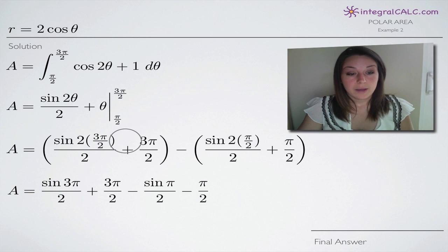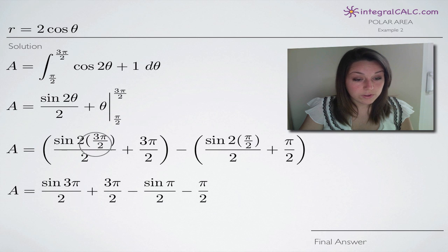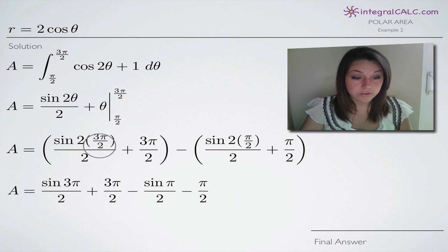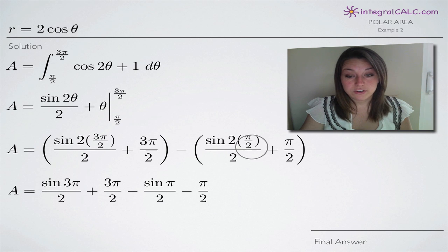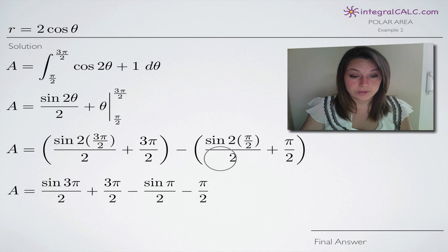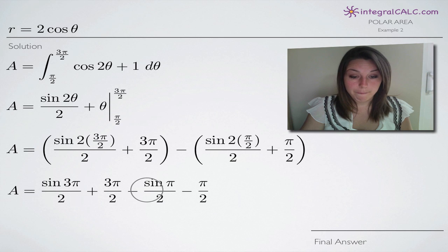The simplification steps are straightforward. We cancel the two in the numerator with the two in the denominator, leaving sine of three pi. The theta term stays as three pi over two. Doing the same for the subtracted term, canceling the twos, we're left with sine of pi over two, and the remaining theta term is pi over two. Distributing the negative sign gives us minus sine of pi over two and minus pi over two.